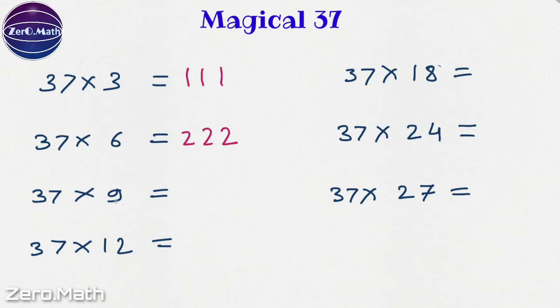To multiply 37 by 9, let's divide this 9 by 3, we will get 3. Write 3 three times. That's the answer. 37 times 12 would be 4, 4, 4. As 12 divided by 3 is 4. So we are writing 4 three times.